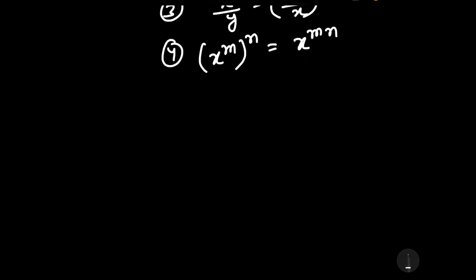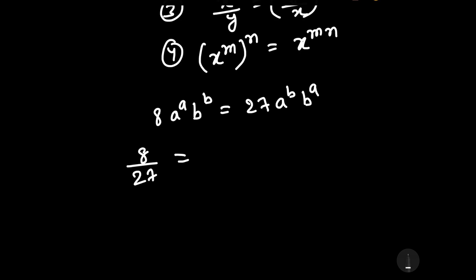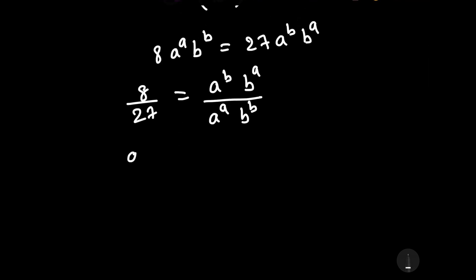Our question is 8 into a to the power a, b to the power b is equal to 27, a to the power b and b to the power a. This can be written as 8 upon 27 is equal to a to the power b into b to the power a divided by a to the power a and b to the power b. Further this can be written as a to the power b upon a to the power a, into b to the power a upon b to the power b, equals 8 by 27. We are just exchanging the LHS and RHS.